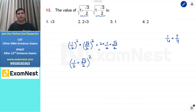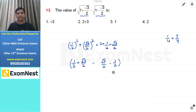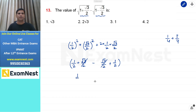क्योंकि solve करने पर 2 cancel हो जाएगा, root 3 by 2 बचेगा। यह जो part है, तो यह हो जाएगा 1 upon 2 plus root 3 upon 2 का square। और अगर हम value का square root लेंगे, तो square root में से square हम हटा सकते हैं। Second part पर focus करें तो हमारा answer आएगा root 3 by 2 minus 1 by 2, और इसका square हमने लिया है। तो root 3 by 2 से root 3 by 2 cancel हो जाएगा, और इस question का answer 1 होगा।